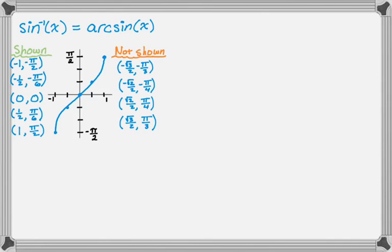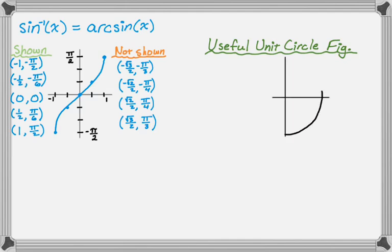There's also a very useful unit circle figure. If you have the unit circle memorized — which you definitely should — it's really just quadrant 4 and quadrant 1. You have the ordered pairs with corresponding angles, but you want to think of the fourth quadrant as going from negative pi over 2 up to 0: so negative pi over 2, negative pi over 3, negative pi over 4, negative pi over 6, 0. And then up here is still pi over 2.